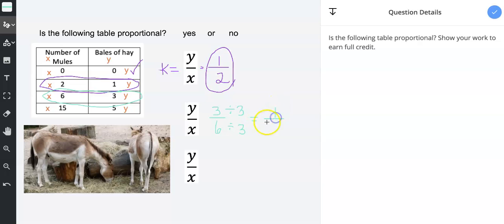3 divided by 3 is 1. 6 divided by 3 is 2. You can't reduce it any further. So far it is proportional.